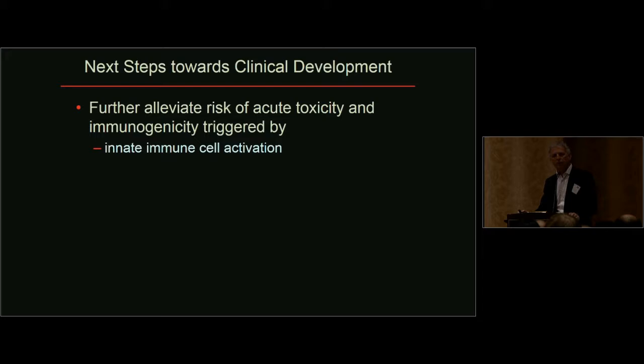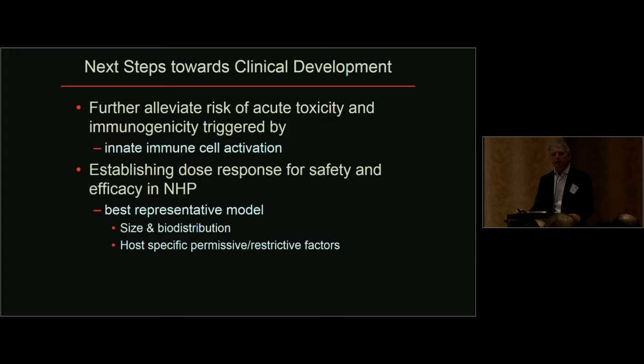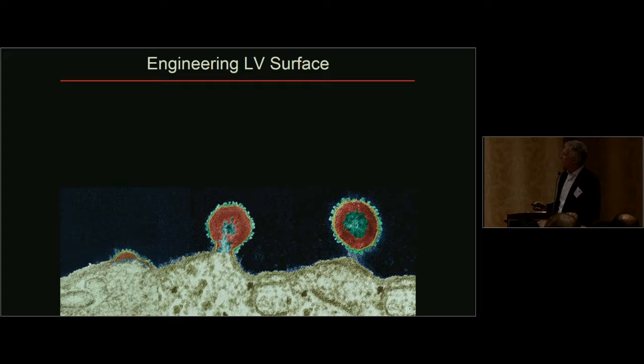Looking at the next steps toward clinical development, there are two key issues. First, can we further alleviate the acute innate inflammatory reaction to vector administration? It's mild, but once you jump from one species to another, you never know whether this will be predictive. Second, can we better predict the dose response when in humans, given species-specific interactions that are very relevant in vector biology? HIV-derived vectors may actually be better suited to humans than to dogs.